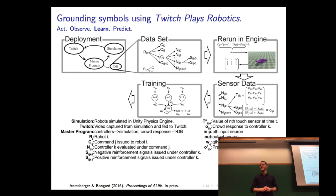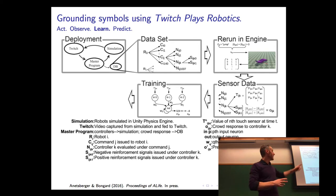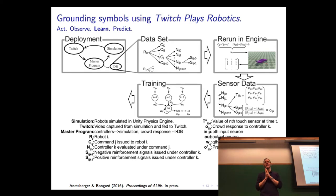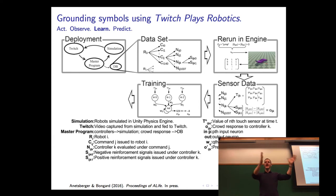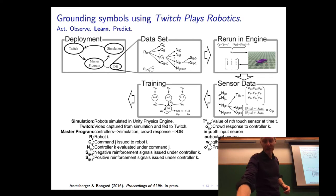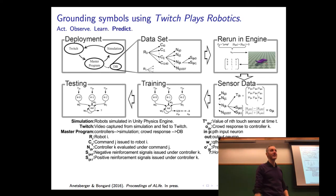If we do that long enough, we should obtain a neural network that is good at predicting crowd response. The question is, how good is good? We train this network not on every single controller from the worm under 'jump' — we take all those controllers, shuffle them, take half for training, and the other half that was not used during training we use for testing.